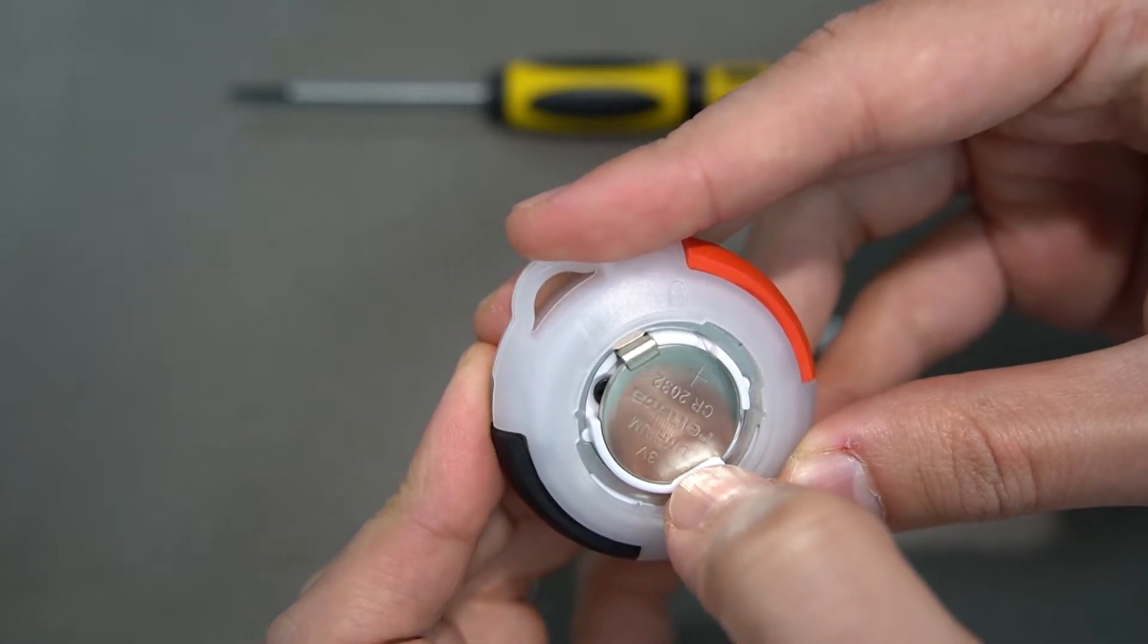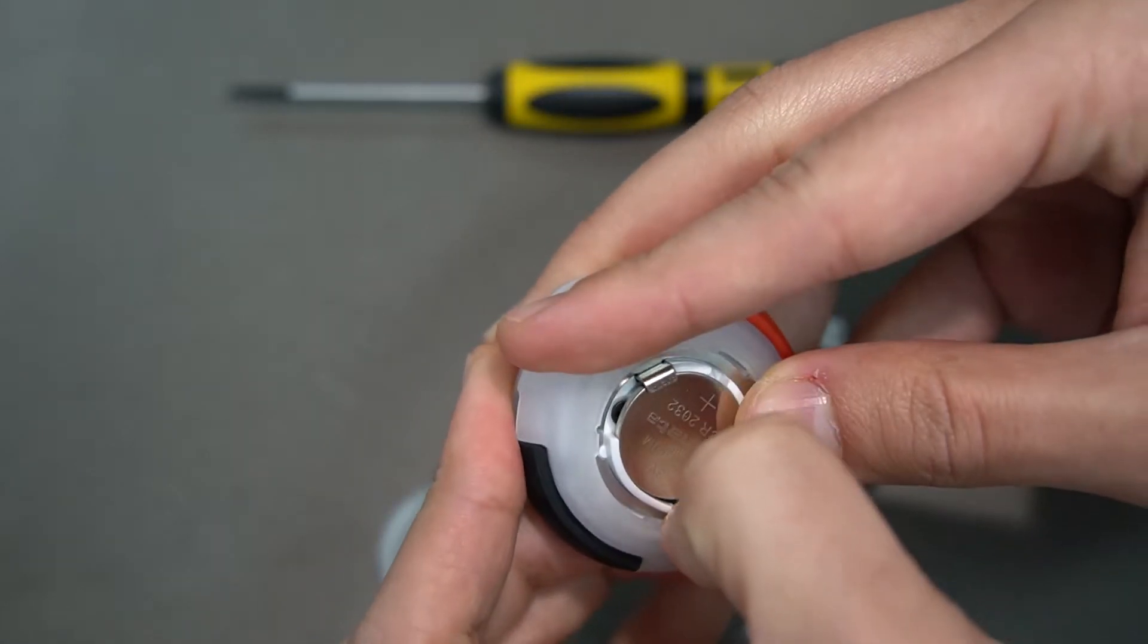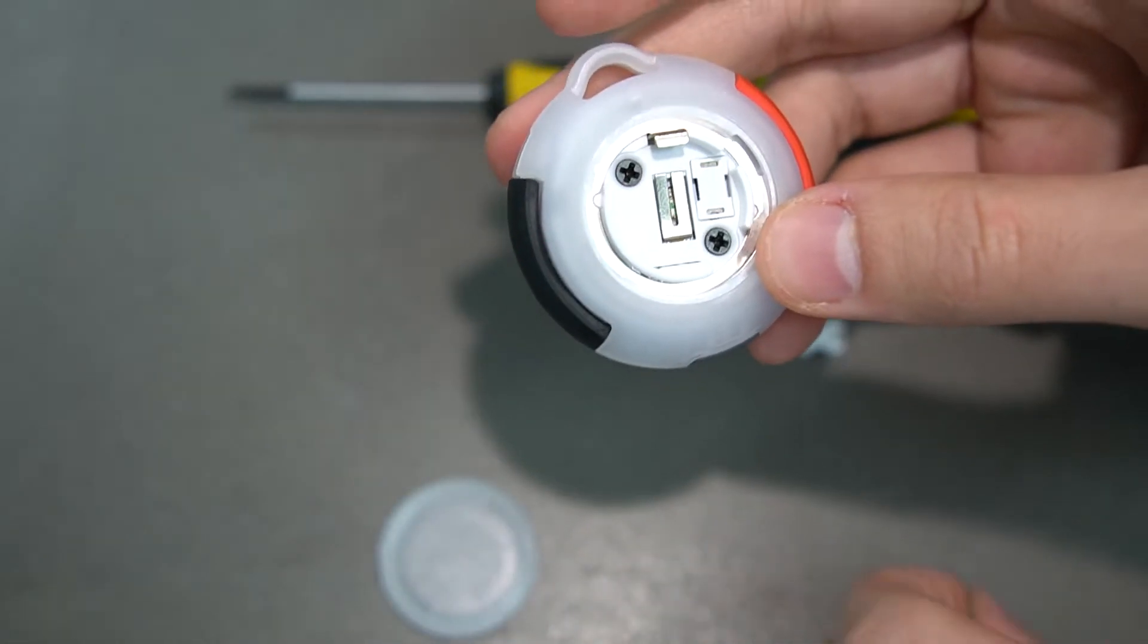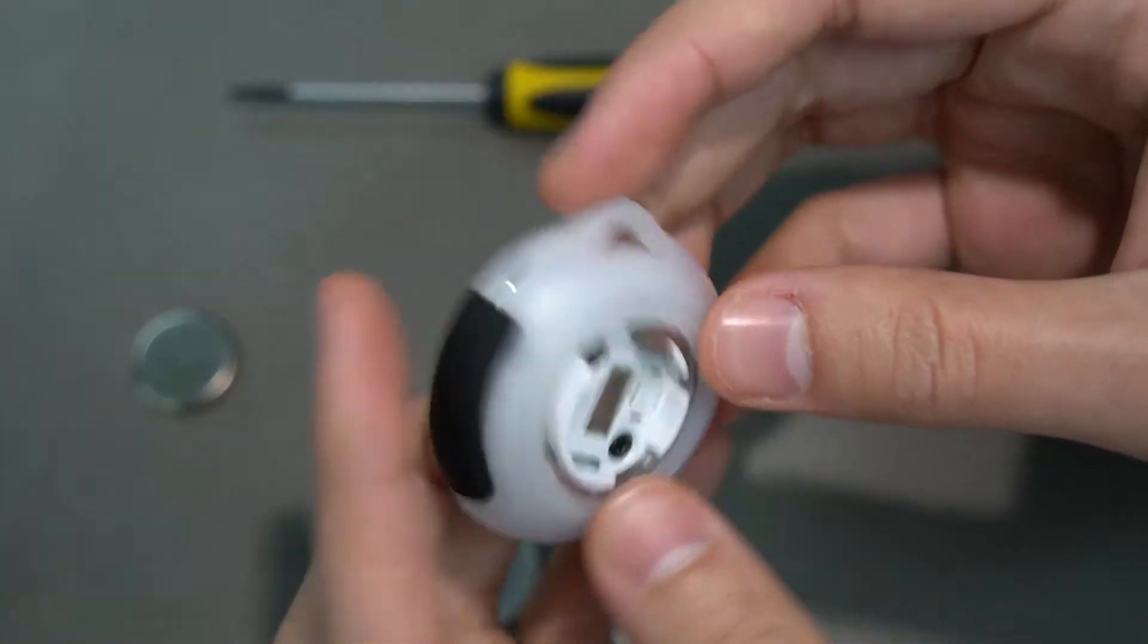All you want to do is just press that little white tab down - it should kind of spring out. Set that aside, and now you can see the fuse in there.